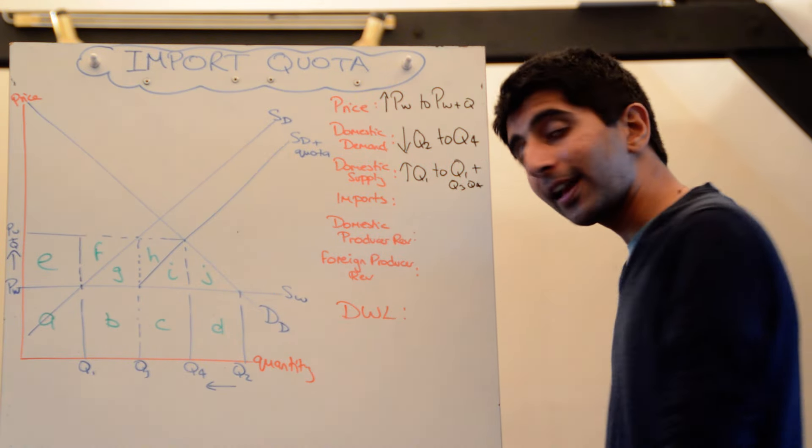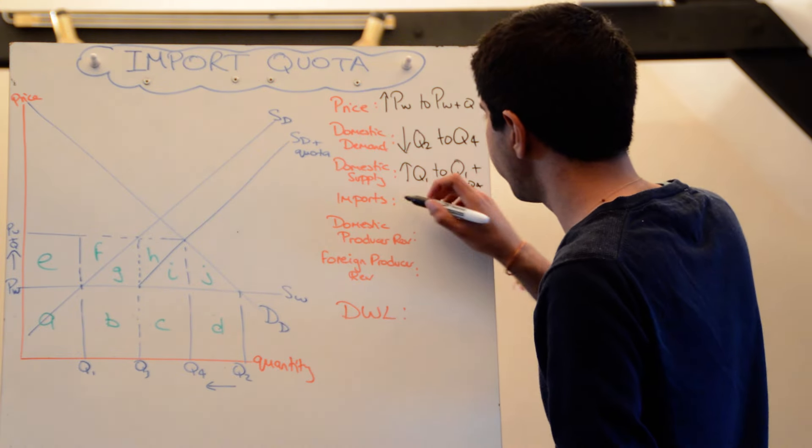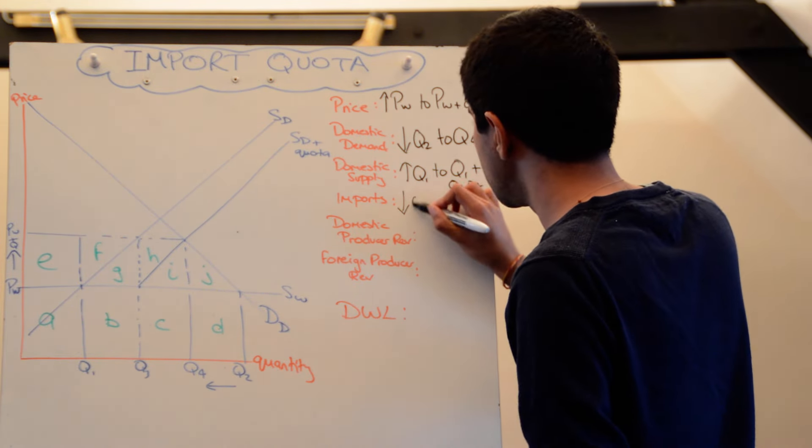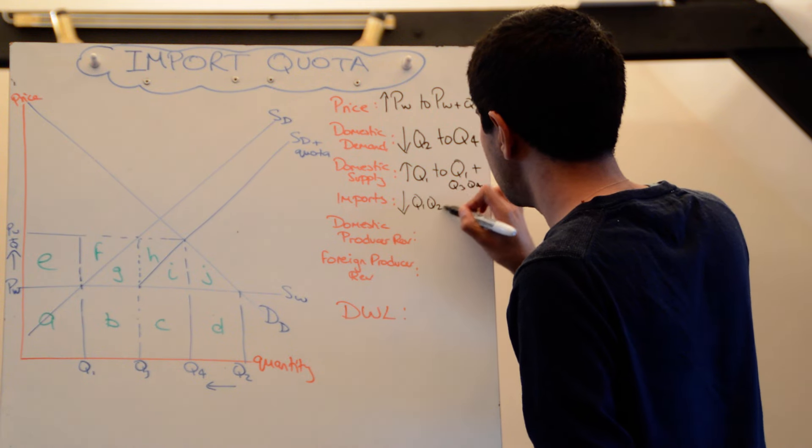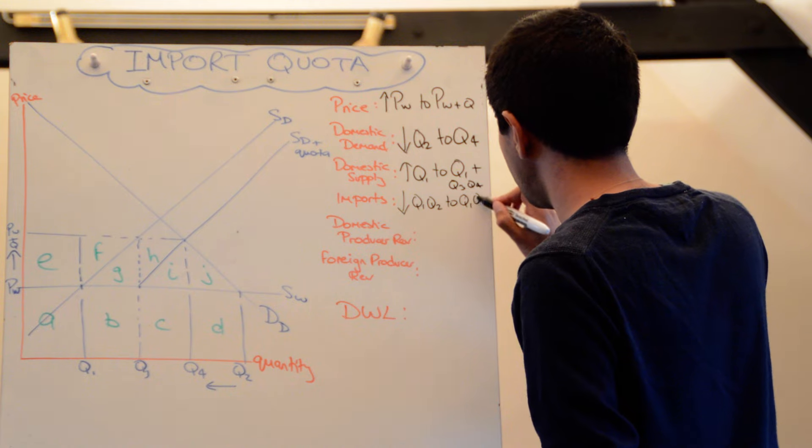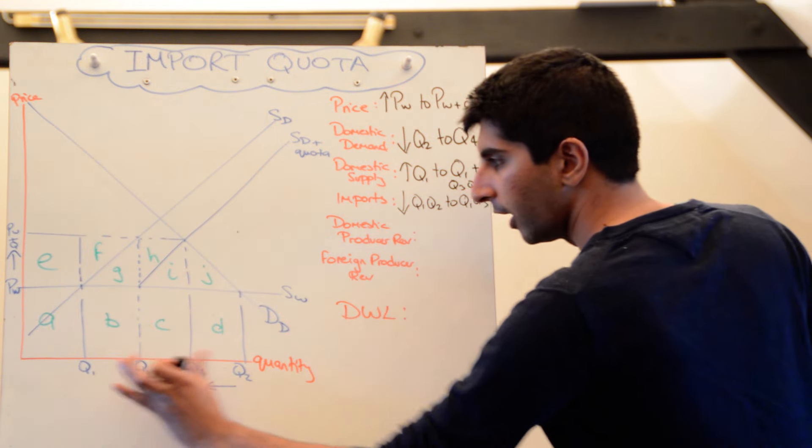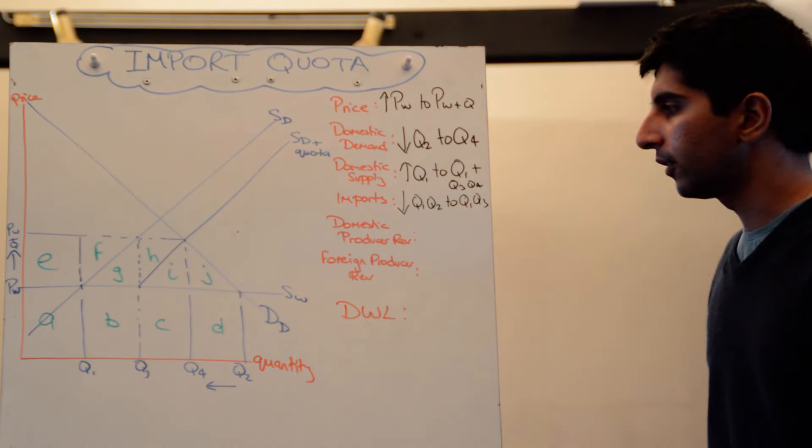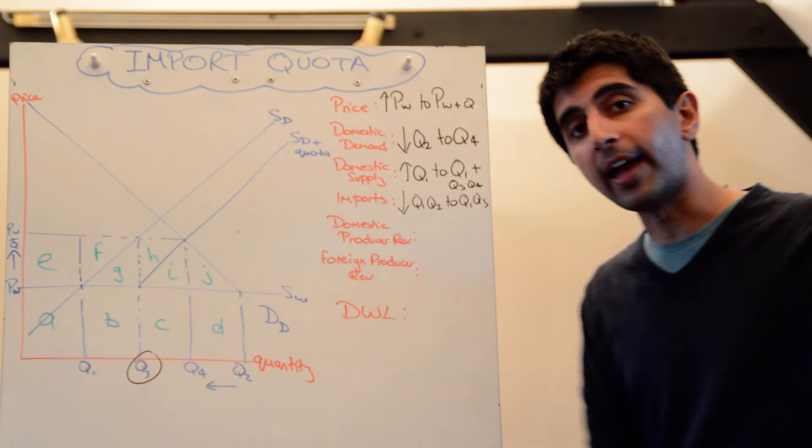The level of imports has been capped. So imports have fallen. That's the idea, isn't it? From Q1, Q2 initially, to just Q1, Q3. And you see that's a much smaller quantity right there. So that is the import restriction right there.